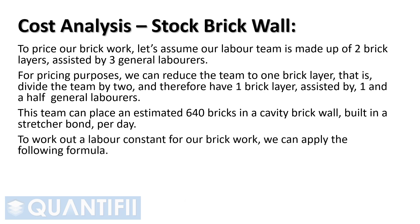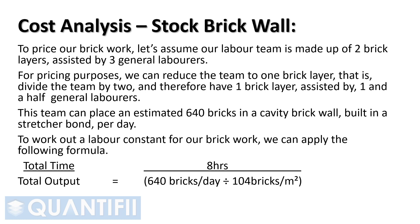To work out a labor constant for our brickwork, we can apply the following formula: total time divided by total output. Therefore, in our example, this will be 8 hours of work per day divided by 640 bricks divided by 104 bricks per square meter. The labor constant is equal to 1.30 hours per square meter.